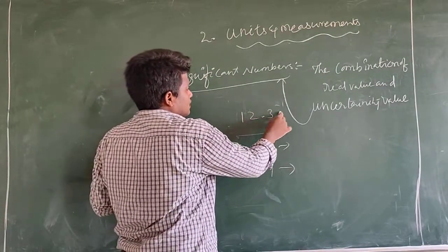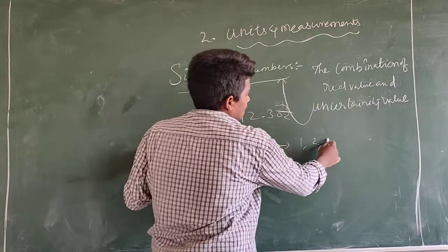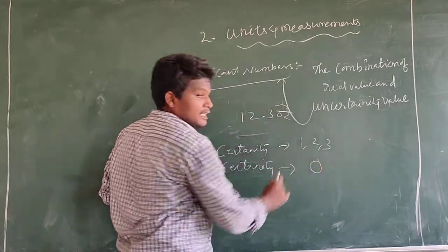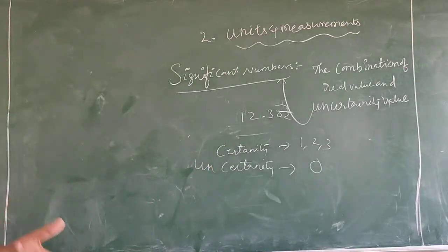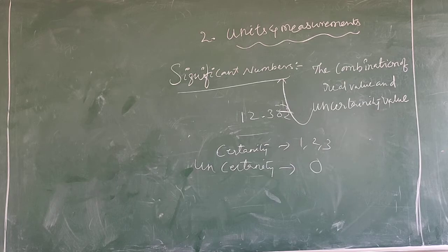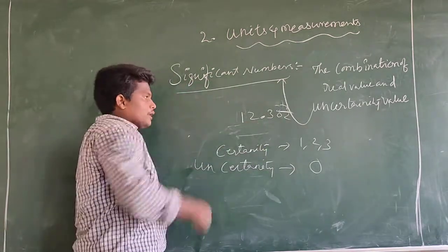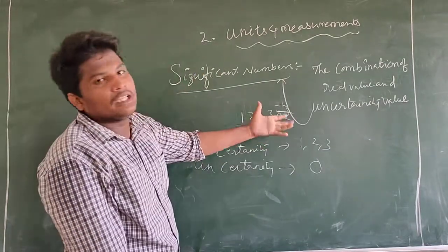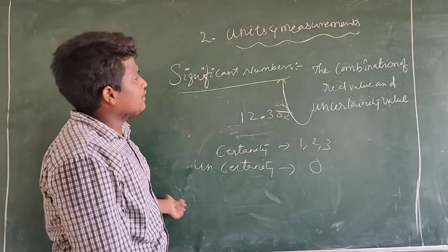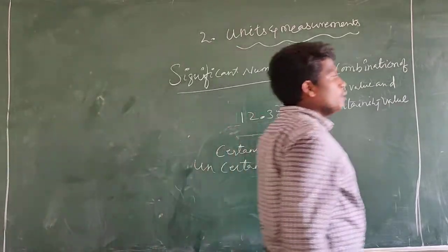For example, 12.30 — 1, 2, 3 are certainty numbers and 0 is the uncertainty number. What is certainty and uncertainty? 1, 2, and 3 are certain digits; 0 is uncertain. So the inventory of significant numbers — significant numbers are important.